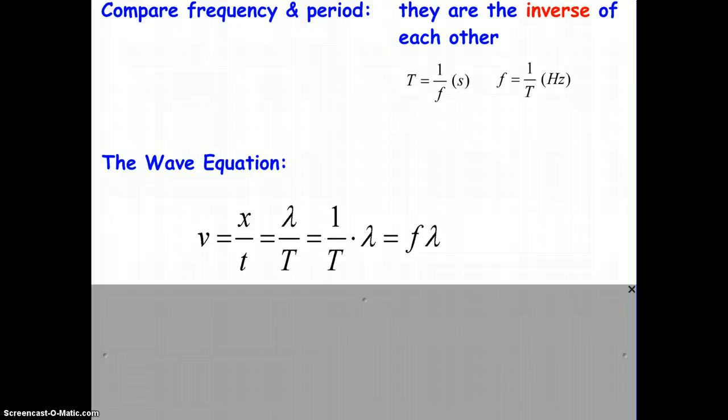So, our v equals x over T becomes lambda over T. Well, if we distribute or factor out the 1 over T and make it more obvious, we will remember, just from our previous discussion, that 1 over T is also f. So, we can take and replace 1 over T with f, and hence, we get the wave equation, which is v equals f lambda.